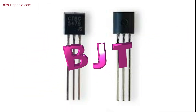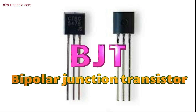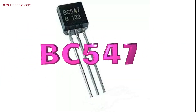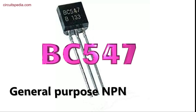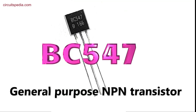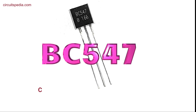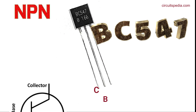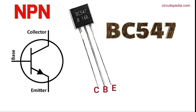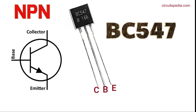This is a BJT — bipolar junction transistor. The number of this transistor is BC547. It is a very famous general-purpose NPN transistor, which you will easily find. Its pins are as follows: the first pin is C, meaning collector; the middle one is B, meaning base; and the third pin is E, meaning emitter.